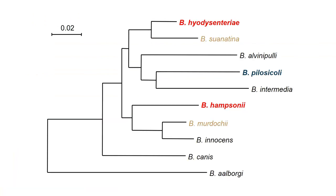Interestingly, Brachyspira hyodysenteriae is classically what we associate with swine dysentery — this was up to the early 2000s or so. More recently, Brachyspira hampsoniae, which was just recently described less than 10 years ago, has been associated with the exact same clinical syndrome. You cannot distinguish whatever disease Brachyspira hyodysenteriae caused from what Brachyspira hampsoniae causes — a different bug. Brachyspira suanatina and Brachyspira murdochii: it's hard to understand if they really can cause swine dysentery or not. There's some case reports saying they do, but most of the time we assume they don't.